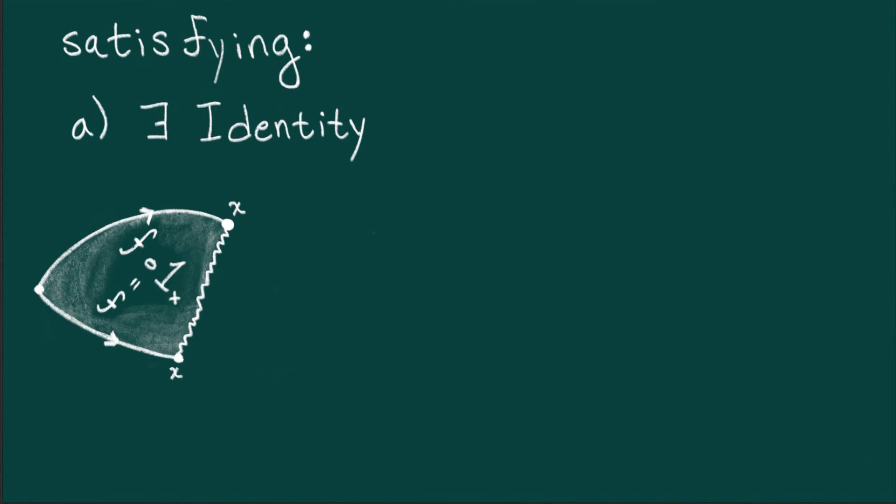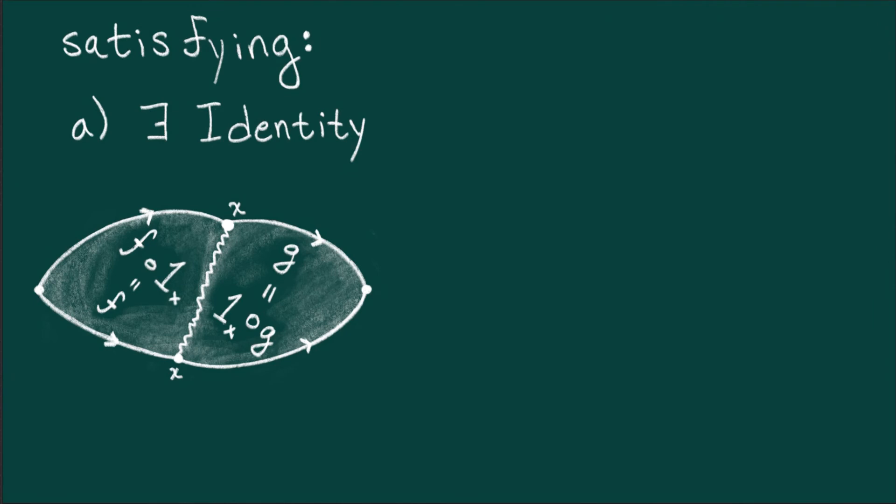Similarly, for any map g, g composed with the identity is just g. Dually, one might say that every map factors through the source and target's identity.